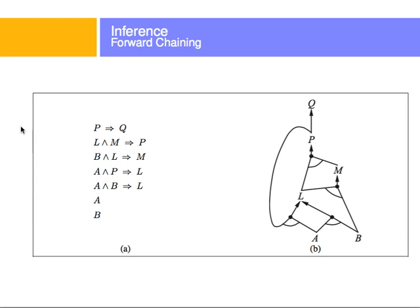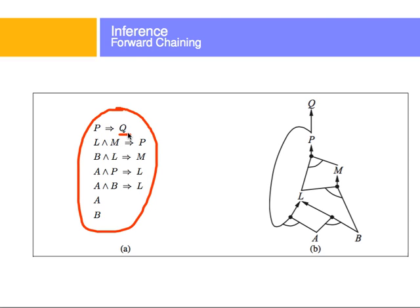For example, let's say you have a knowledge base in horn clauses, and Q is my query. I want to know if my knowledge base implies Q — whether some implication implies my query. This is what I want to prove: that there's some P implying that I'm safe, or that there are no pits in some square. And this is my knowledge base.